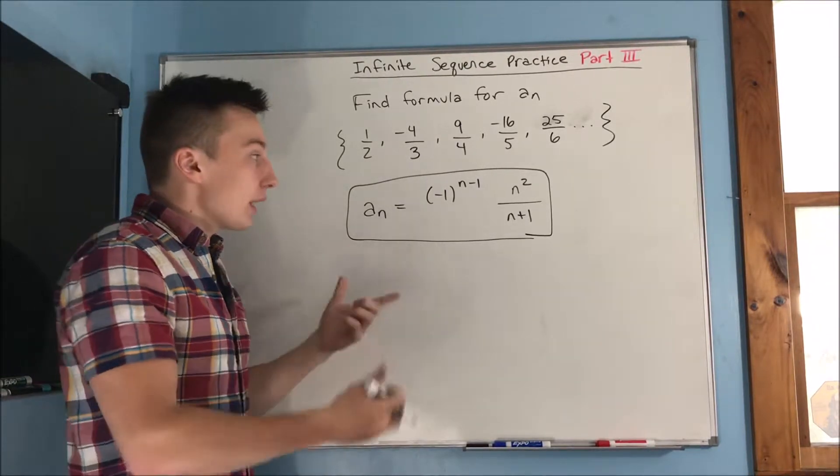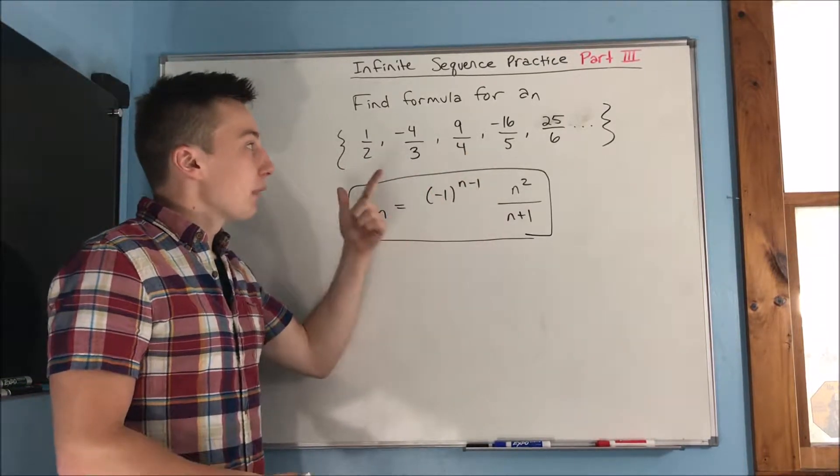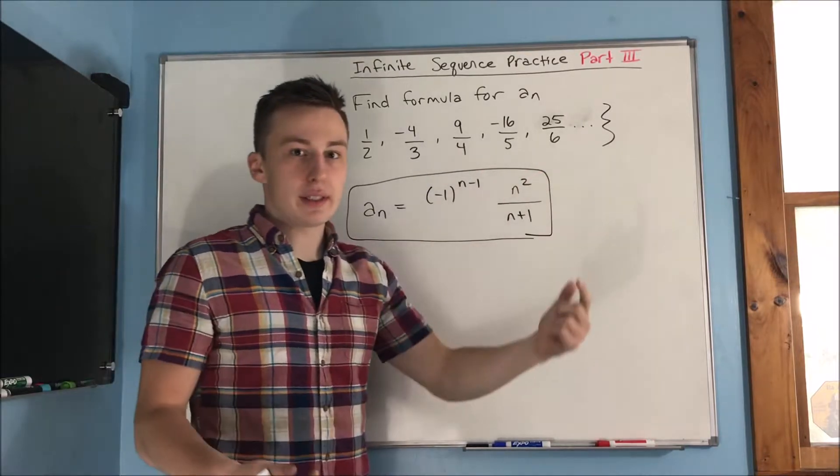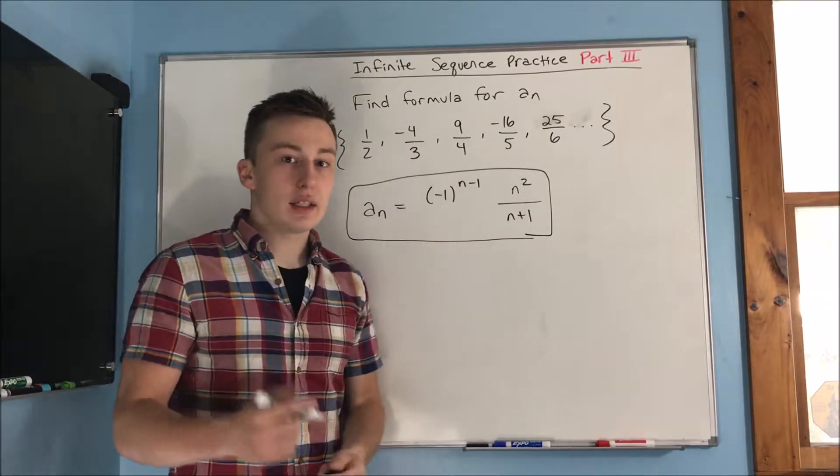So we just broke it down into different pieces. First, we had to deal with that negative, so we got that out of the way. And then we dealt with that denominator because it looked a little easier. And then we just figured out what the numerator was, and that did it.